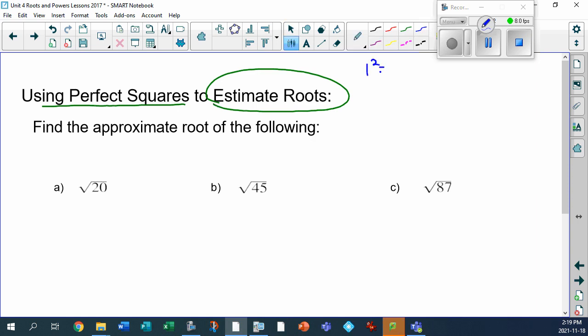Remember the perfect squares. 1 squared is 1. 2 squared, 4. 3 squared, 9. 4 squared, 16. 5 squared, 25.